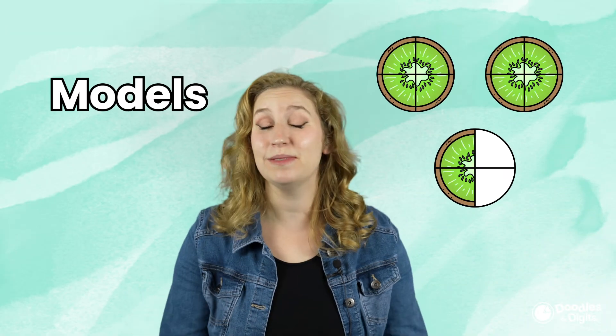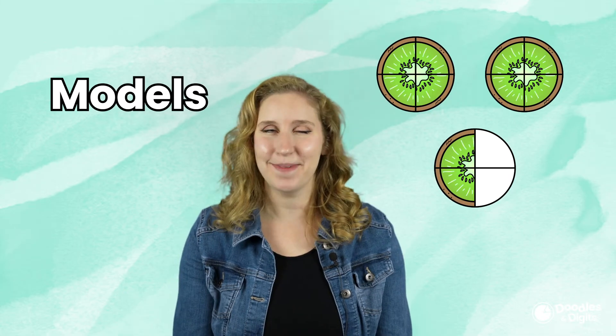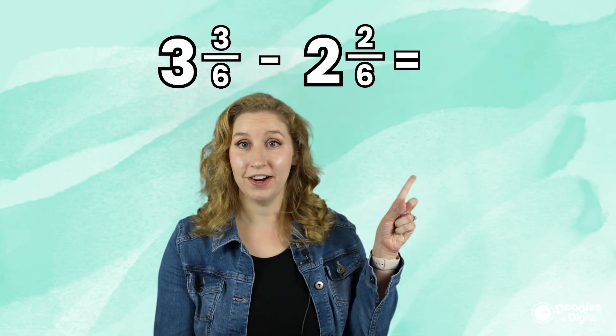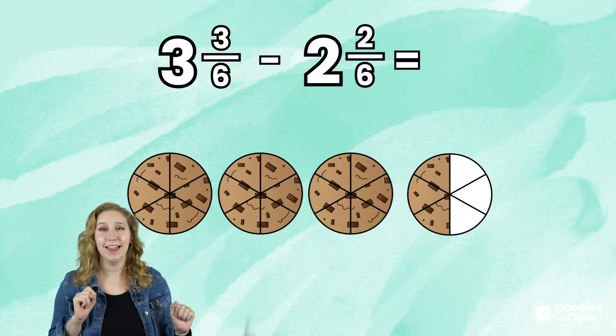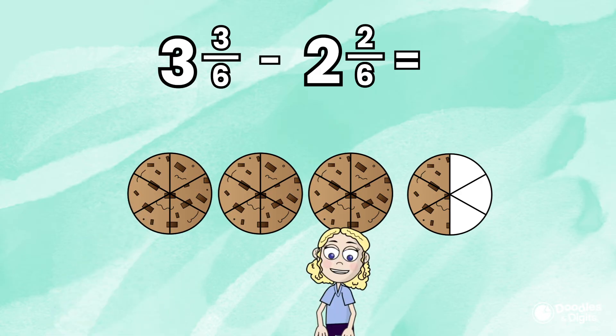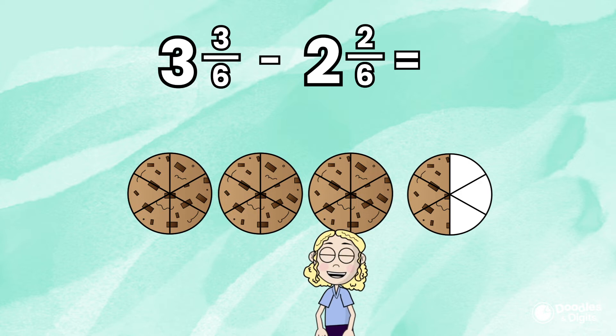Now we're going to use models to subtract mixed numbers. I love models because it's a great visual to see what's actually going on. Let's look at this problem right here. I'm really feeling cookies. Let's do mixed numbers with cookies. What is going on with the cookies? How many wholes do we have and what fraction is being shown?